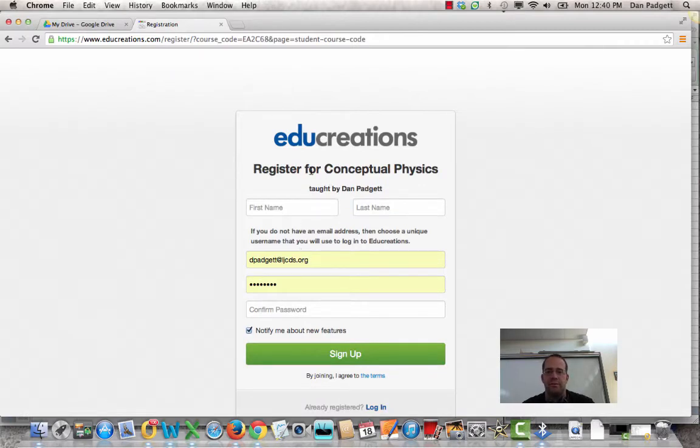Okay, so we're going to register for Conceptual Physics taught by Dan Padgett. Let's make up a random name. We're going to call this person James Van Der Beek for some reason. His username, let's do Beaker there. And he's going to be part of my class. His password, I'll just make something up.